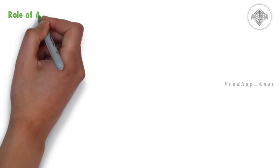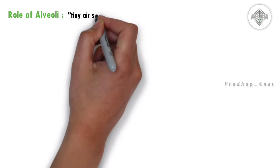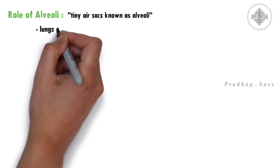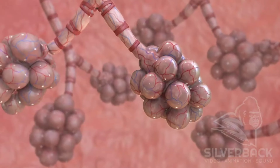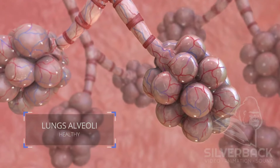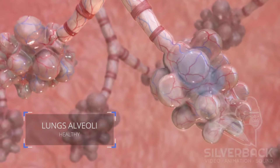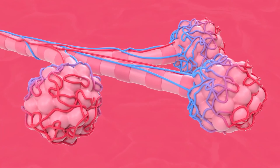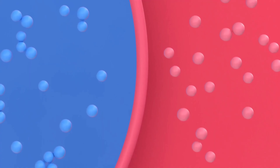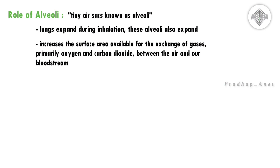Inside our lungs, we find tiny air sacs known as alveoli. As the lungs expand during inhalation, these alveoli also expand. This expansion increases the surface area available for the exchange of gases, primarily oxygen and carbon dioxide, between the air and our bloodstream.